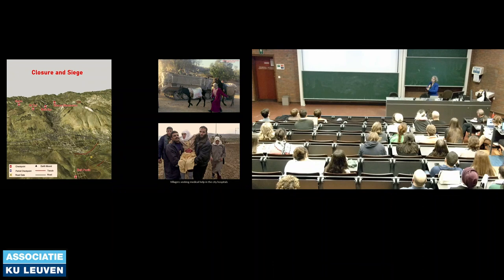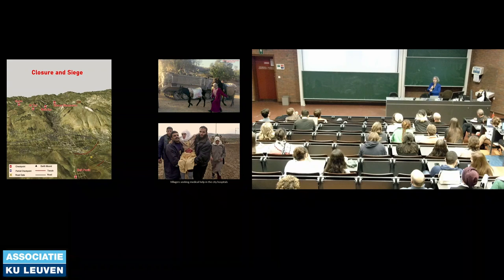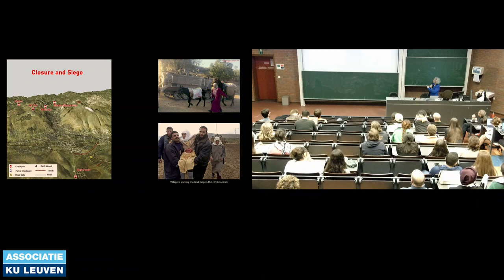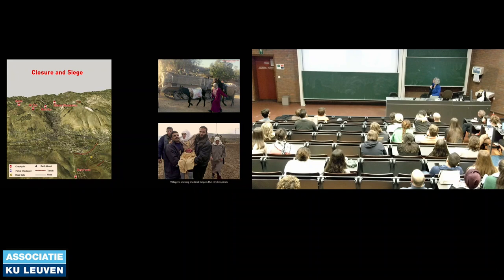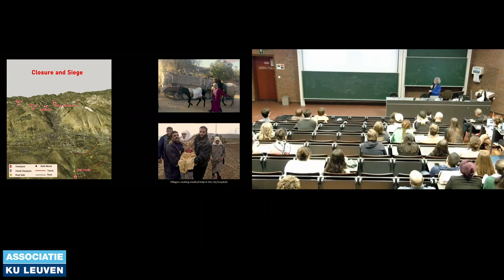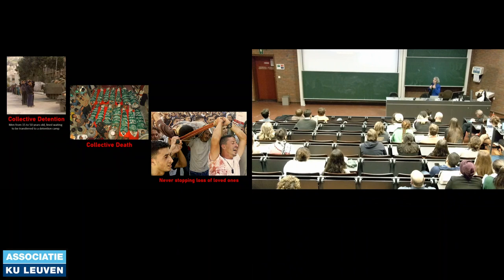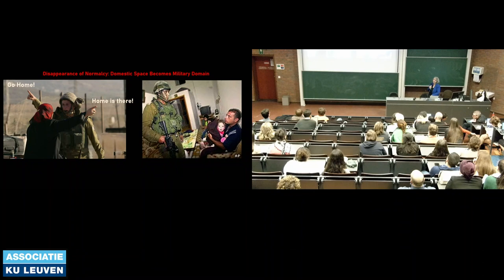What are the impacts on the human experience? The closure and siege. During these invasions, people could experience 100 days of curfews — not being allowed to go outside. Between 2002 and 2005, people could hardly leave the city; kids who grew up during this period didn't even know what other cities looked like. They were confined to their own neighborhoods. Nablus is the economic capital, so all the surrounding villages had huge economic dependency on the city. They couldn't reach the city, couldn't access medical help, schools, or universities. And the toll of this collective detention, collective death, the never-stopping loss of loved ones, and the disappearance of normalcy — how the domestic space, by just bombing a hole through your living room, becomes military terrain.